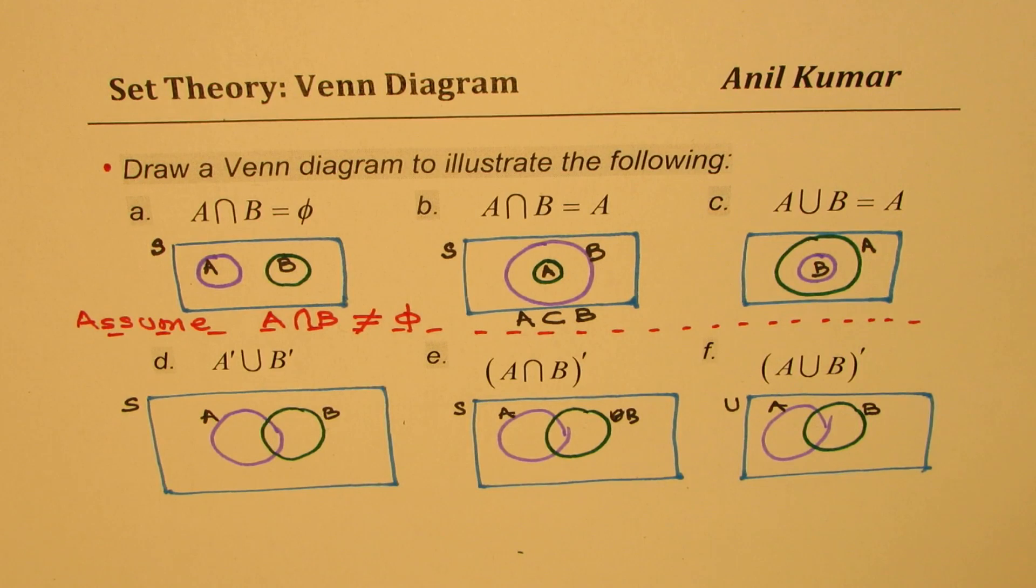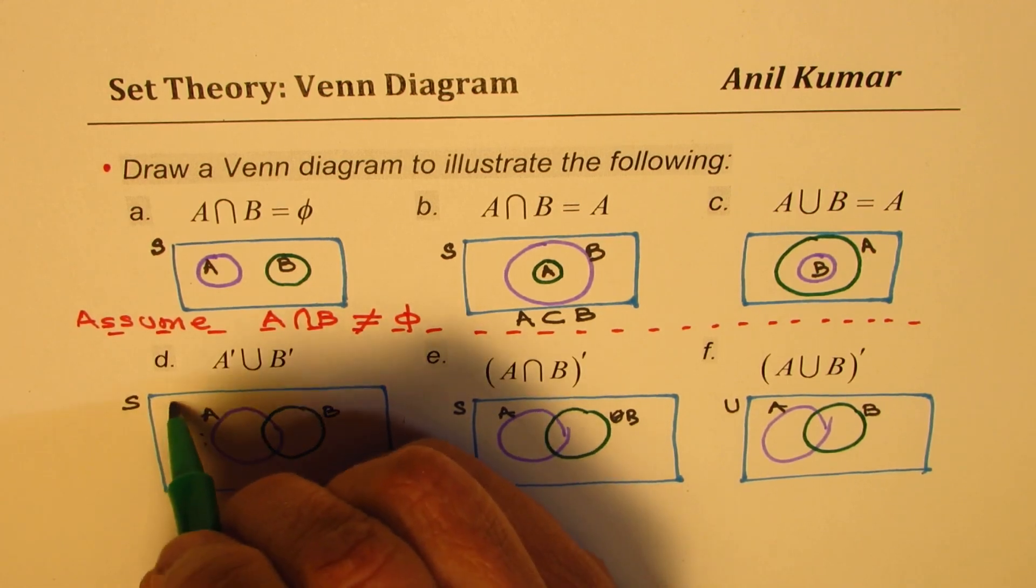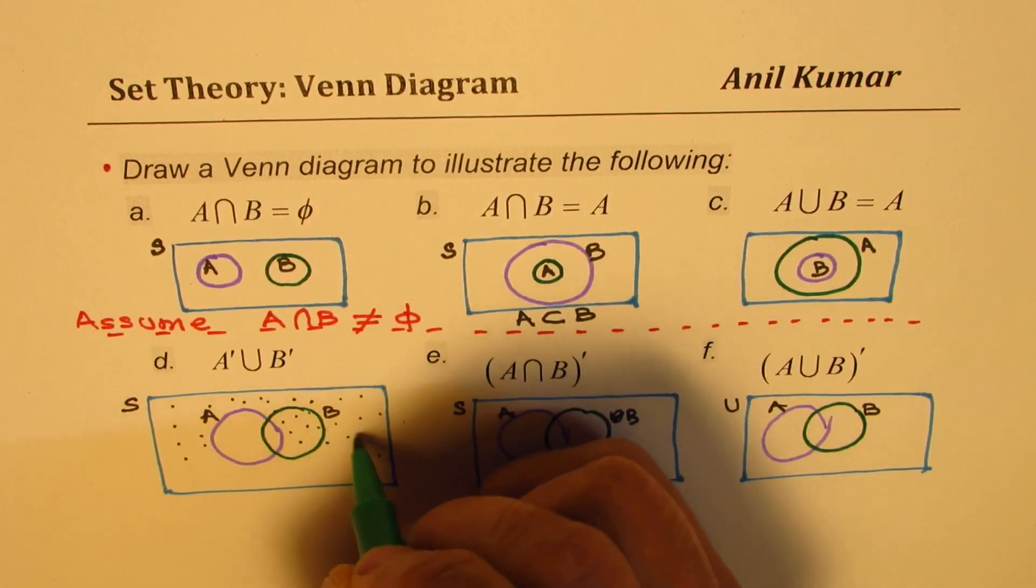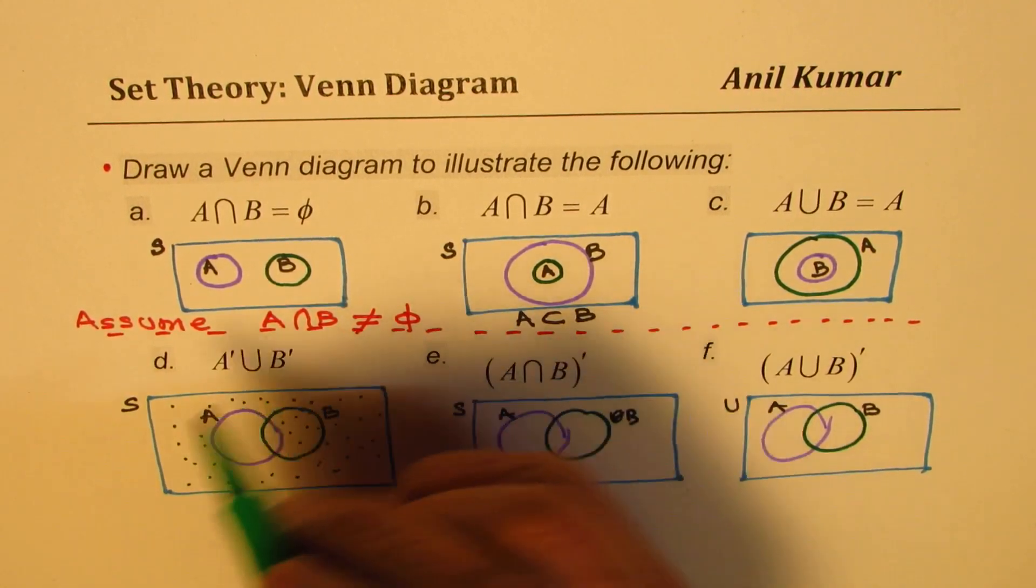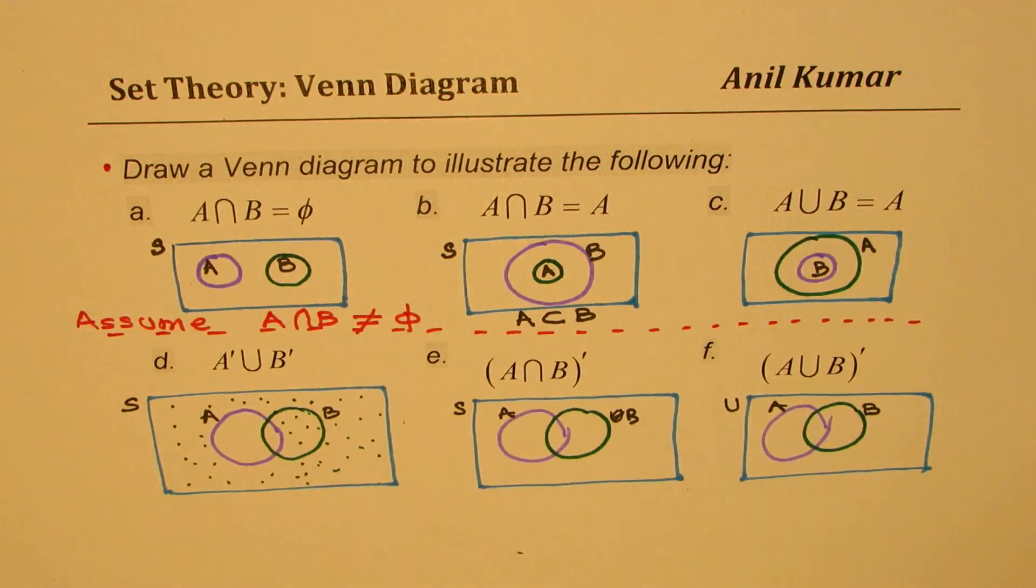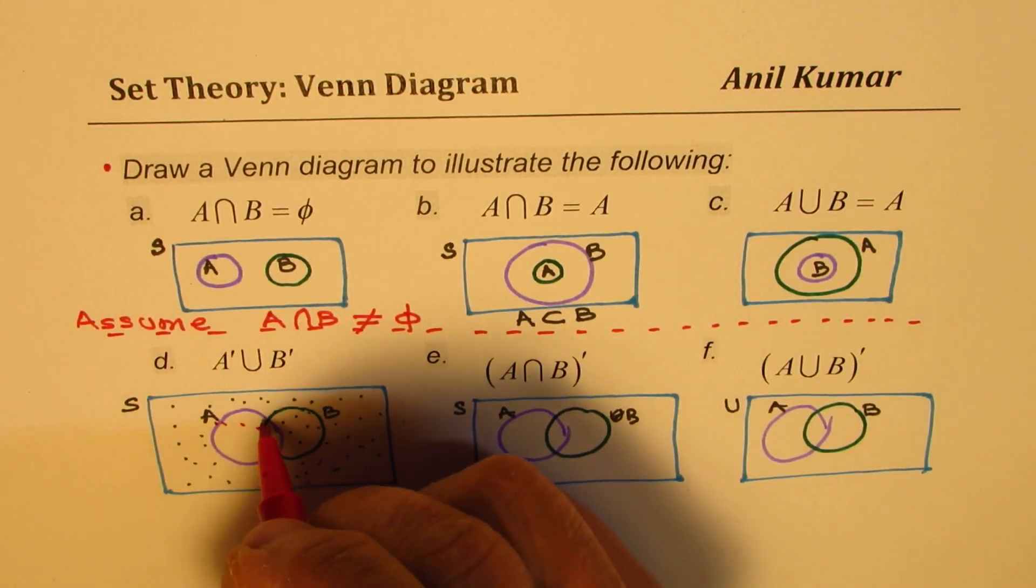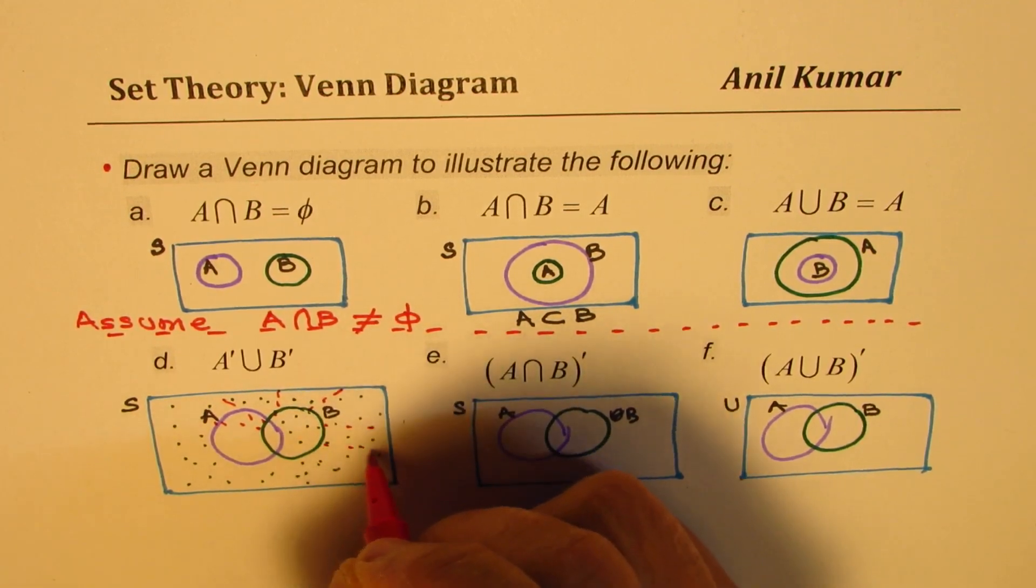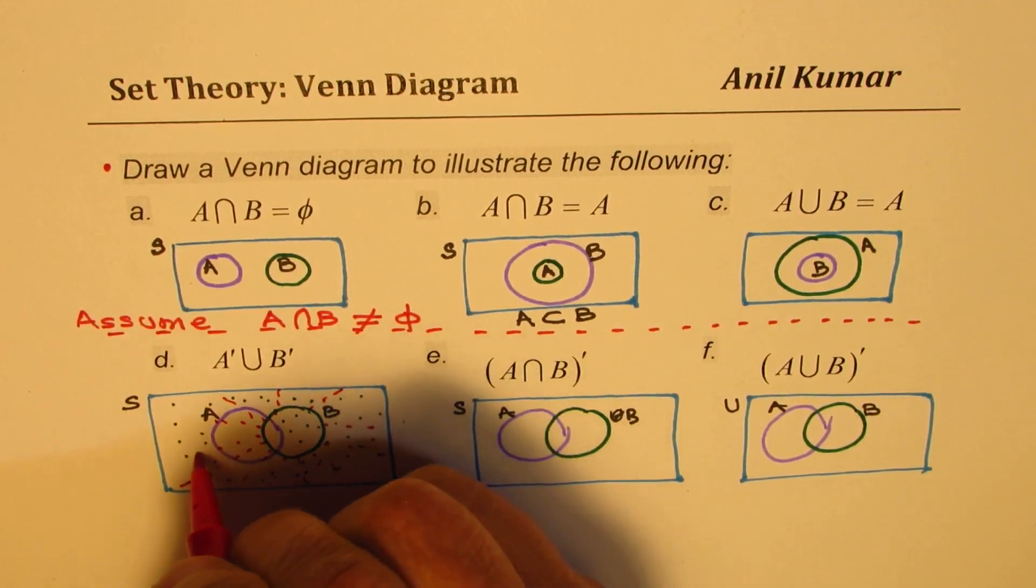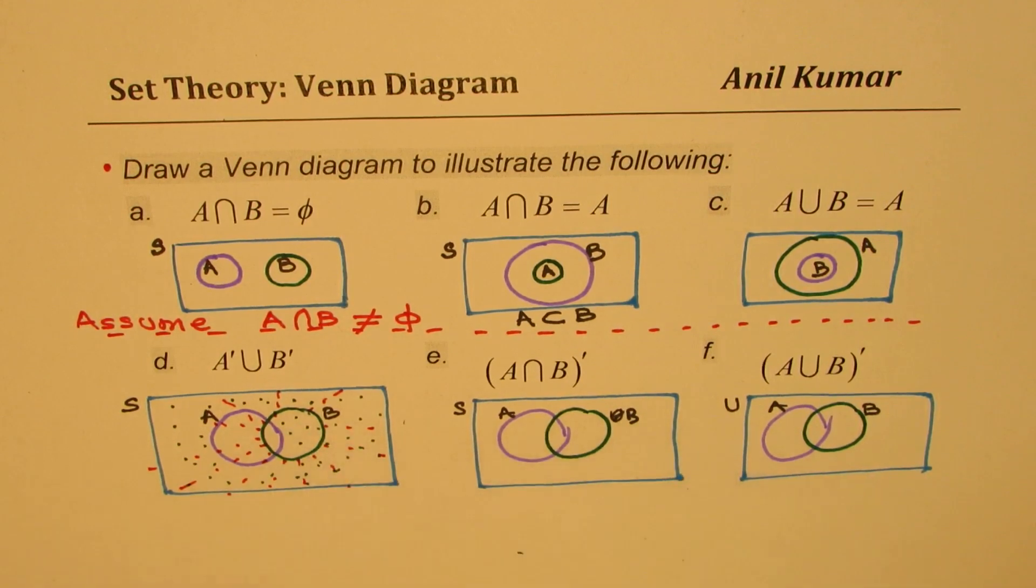So let's do the very first one which is we are looking for union of not A and not B. So when I say not A, not A means all this is not A. Even this is not A. All this is not A. And what is not B? Not B is outside B. So that means outside B not B will be kind of like this. All this is not B. So everything outside. So what do you really see here is that everything apart from intersection of A and B should be shaded.